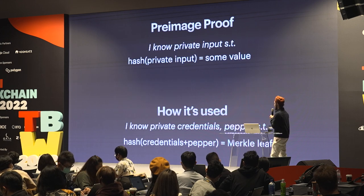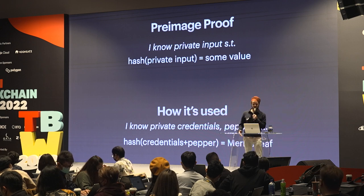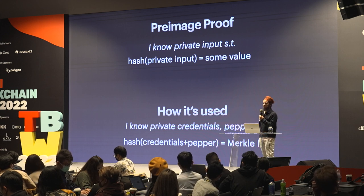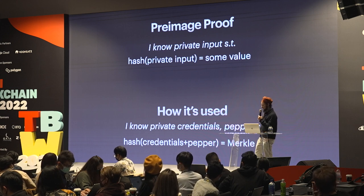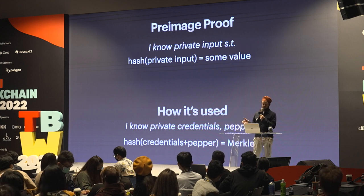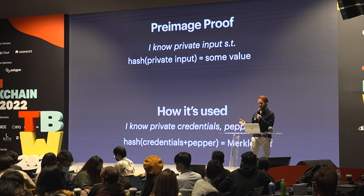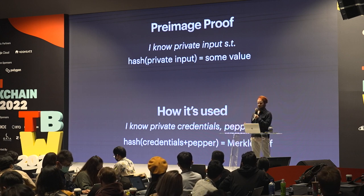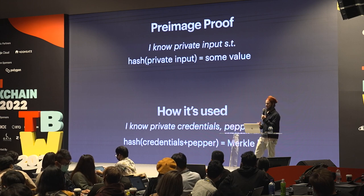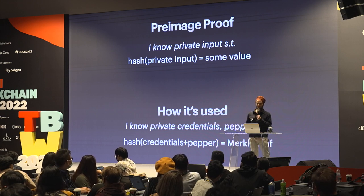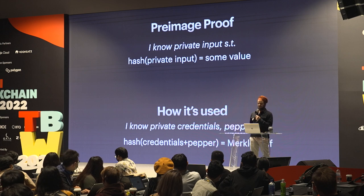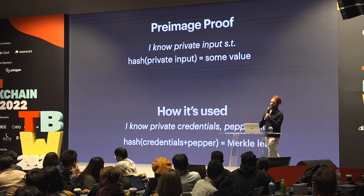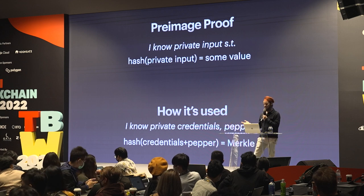The cryptographic primitives we employ involve pre-image proofs. A pre-image is the input to a hash function — the hash function takes the pre-image as input and gives a digest as output. The digest is publicly known but you want to show you know the private input that makes the hash. This is the bread and butter of a lot of applied ZK — for example, showing you know some private credentials that are on a public Merkle tree.